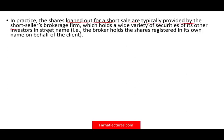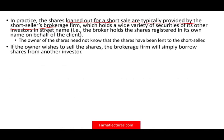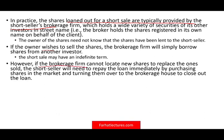In practice, shares loaned out for a short sale are typically provided by the short seller's brokerage firm — for example, a Schwab account. Schwab borrows the shares from another customer's account without that customer knowing. If the owner wishes to sell, the broker will get the shares from somewhere else or from their own inventory. The short sale may have an indefinite term; if the brokerage can't locate new shares, the short seller would need to repay by purchasing in the market, though this rarely happens.